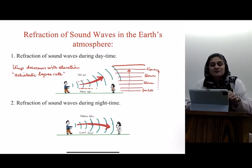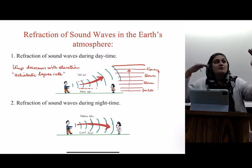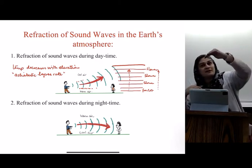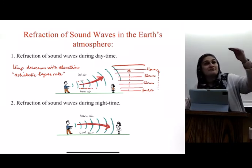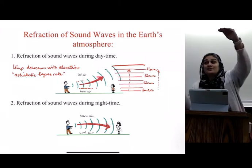So opposite effect happens during nighttime. Cool air on the surface, warm air at the top will cause the same temperature gradient, but in the other direction. So sound will travel faster at the top and slower at the bottom.